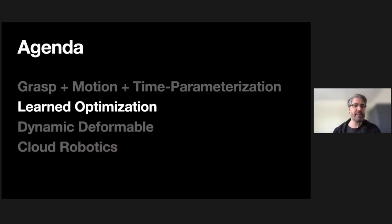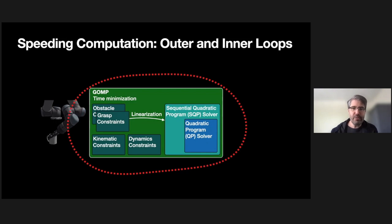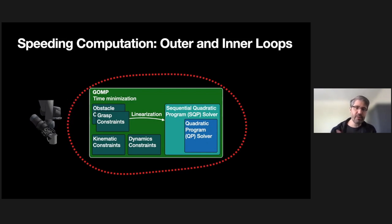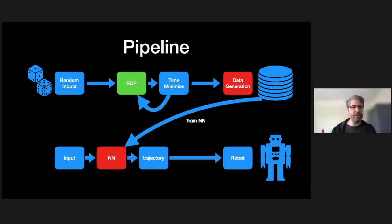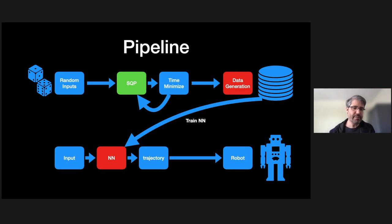That leads into learned optimization. We wanted to look at speeding up this computation and took two approaches — speeding up the outer loop and the inner loop. For the outer loop, we asked: could deep learning do this whole optimization for us? We set up a pipeline where we generate random inputs from a distribution likely to be seen when the robot is actually running, generate optimal trajectories, put them in a database, and train a neural network. At runtime, we put the start and end points into the neural network, get a very fast forward pass, and get a trajectory to run on the robot.